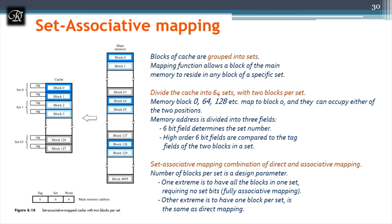These two disadvantages can be overcome with set associative mapping, which is a combination of direct mapping and associative mapping. The cache is divided into sets. Direct mapping decides which set a block belongs to; within that set, associative mapping decides which line to use.